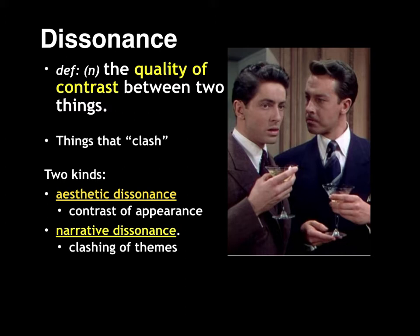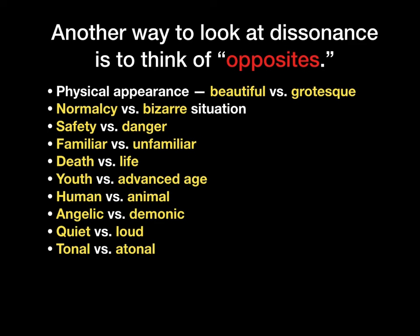Dissonance tends to play out in the clashing of opposing forces. You can think of narrative dissonance as a bunch of opposites — the interplay between good and evil, light and darkness, beautiful and grotesque, human and inhuman. What's so great about the film Rope is that there is an underlying, all-encompassing design of the film that seems to echo this dissonance idea.